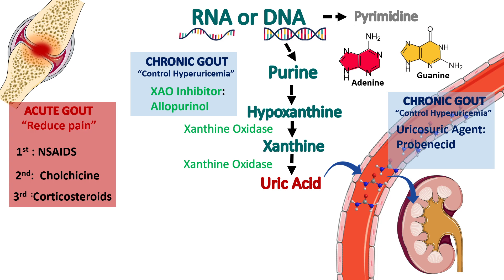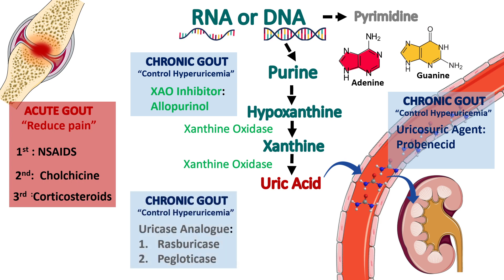If we fail to control uric acid levels in blood after using these two, we go for a third line of drugs — that is uricase analogues. In birds, we have an enzyme known as uricase which converts uric acid into allantoin, which can be easily excreted by the kidney. We humans don't have this uricase enzyme. So if we introduce uricase in the body as a medicine, we can convert uric acid into allantoin and easily excrete it. Uricase analogues include rasburicase and pegloticase.